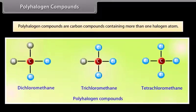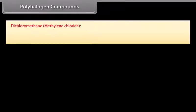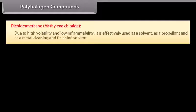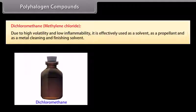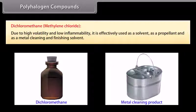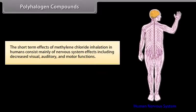Polyhalogen compounds are carbon compounds containing more than one halogen atom. Dichloromethane or methylene chloride: Due to high volatility and low inflammability, it is effectively used as a solvent, as a propellant, and as a metal cleaning and finishing solvent. The short-term effects of methylene chloride inhalation in humans consists mainly of nervous system effects including decreased visual, auditory, and motor functions.